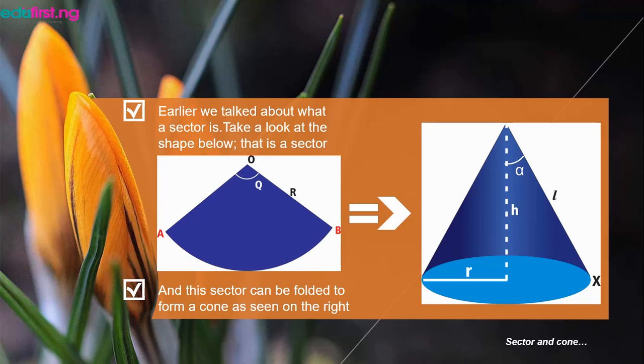You can practically cut out a sector from a piece of paper and fold it, allowing both edges, both ends of the arc, to touch. What we will have in the end is a cone.